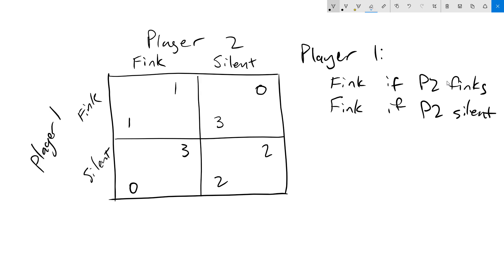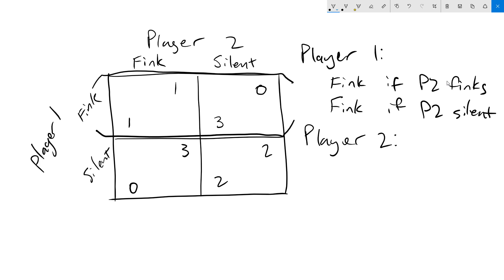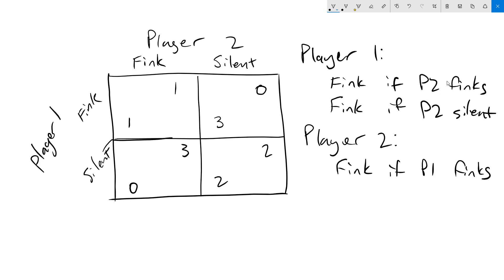Let's go ahead and look at the same question for player two. For player two, we're now going to take player one's actions as given. So first we'll say what happens if player one thinks. Player two can get one if they think, zero if they stay silent. So their best response here is think if player one thinks. Now we can do the same thing for what happens if player one is silent. We'll look at just the silent row here. Player two can get three from thinking, two from staying silent. Again, think is better. So part of their best response would be think if player one is silent.